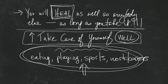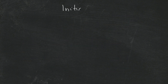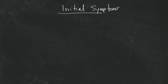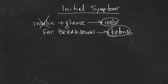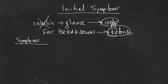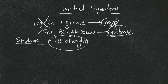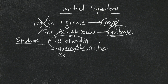Let's talk a little bit now about the initial symptoms. Remember we talked about insulin taking glucose into the cells — if you don't have insulin, you start breaking down fat, which gets dangerous because of the ketones. The first symptom was loss of weight. That's because of the fat breakdown. Then there was excessive urination and extreme thirst.